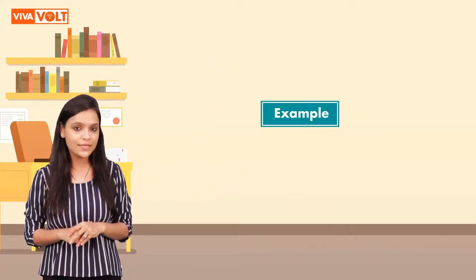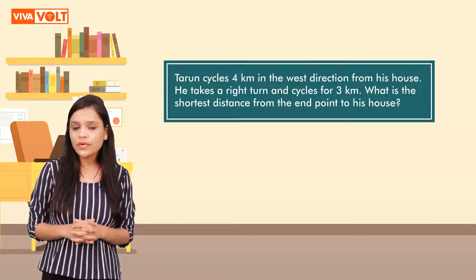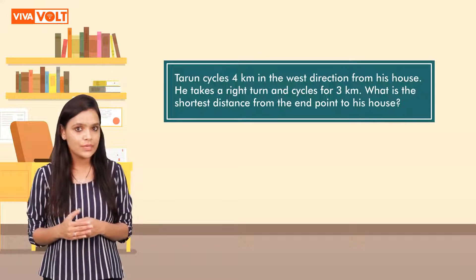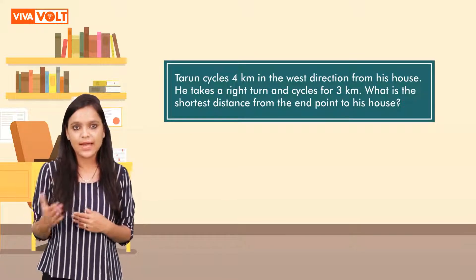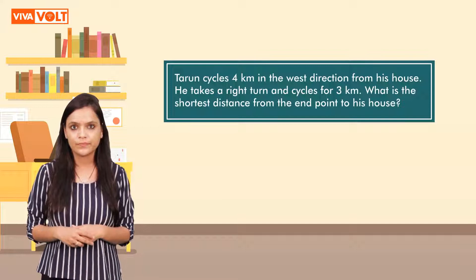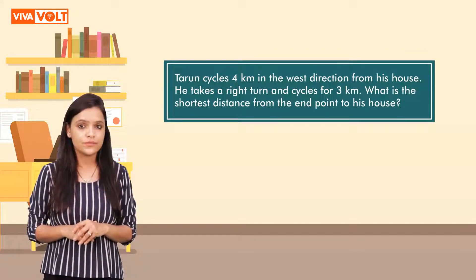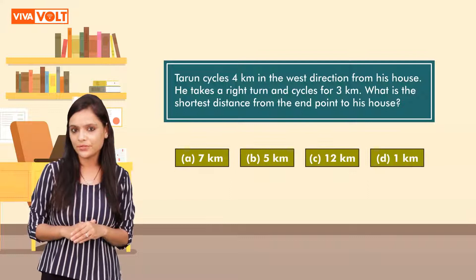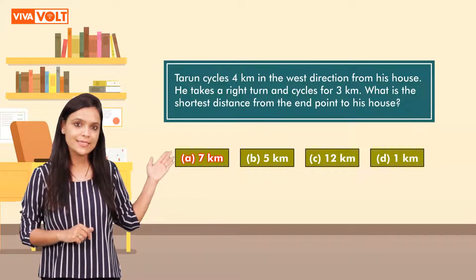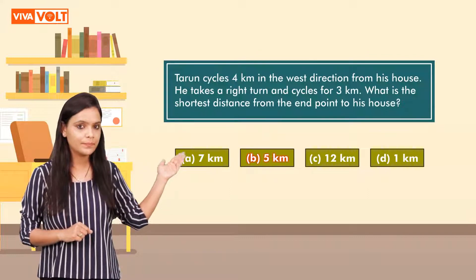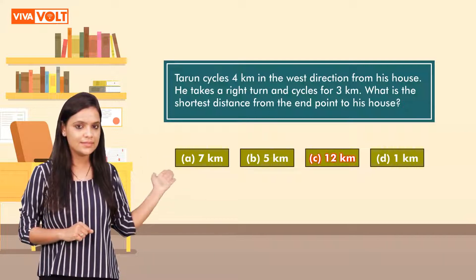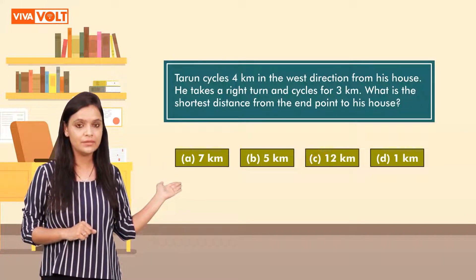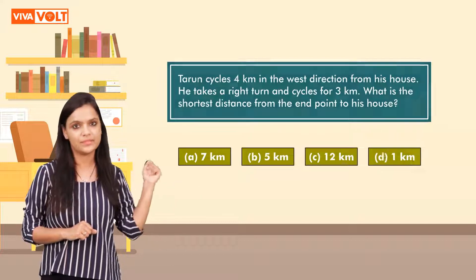Let's solve an example to understand the concept better. Tarun cycles 4 km in the west direction from his house. He takes a right turn and cycles for 3 km. What is the shortest distance from the end point to his house? Options are: A. 7 km, B. 5 km, C. 12 km, D. 1 km. Let's make a diagram with the given information.